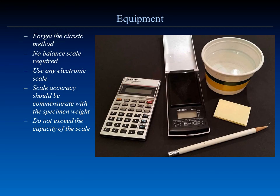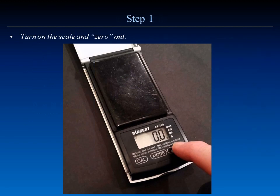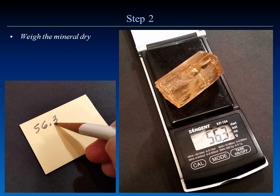Forget the classic method — no balance lab scale is required. Just an electronic scale: a simple inexpensive $20 scale with a 300-gram capacity. We have a cup of water, a post-it, a pencil, and a calculator. The process starts by zeroing out the scale, then you weigh the mineral. In this case, set to grams, we get a value of 56.3 grams. Write that down.